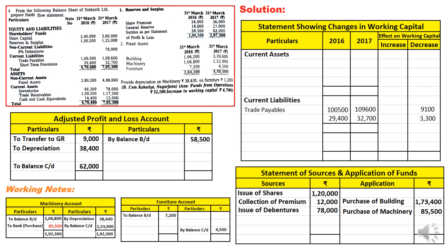In the same way, we prepare the furniture account. Depreciation on furniture is ₹1,200, written as a credit in the furniture account, and the same ₹1,200 is written on the debit side of the adjusted P&L account. When we close the furniture account, the balancing figure appears on the credit side as ₹1,500 — this means there was a sale of furniture, recorded as a source of ₹1,500. In machinery the balancing figure was on the debit side indicating a purchase; in furniture it is on the credit side indicating a sale.